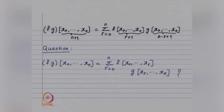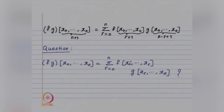Here the points were repeated. So the question is whether we can have a formula of the type with x₀, x₁, …, xₙ — n+1 distinct points — instead of n+1 coincident points. The conjecture is that the divided difference of f·g based on x₀, x₁, …, xₙ equals the summation r from 0 to n of [f; x₀, …, xᵣ] times [g; xᵣ, …, xₙ]. The answer is yes, and that is the Leibniz formula for divided differences.